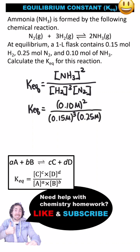Now I can just put all this into my calculator. 0.1 mole per liter squared divided by 0.15 cubed times 0.25 mole per liter to get 12. The units all cancel, so we don't have any units with the constant.